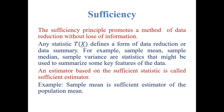The sufficiency principle promotes a method of data reduction without loss of information. Any statistic T(x) defines a form of data reduction or data summary. For example, sample mean, sample median, and sample variance are statistics that might be used to summarize key features of the data. An estimator based on sufficient statistics is called a sufficient estimator. If our statistic contains the same information about the unknown parameter that is contained in the sample, then we call this a sufficient statistic. Otherwise, it is not a sufficient statistic. Sufficiency is an important property for data reduction.